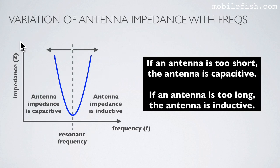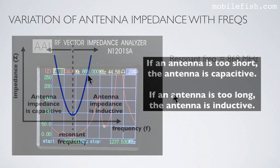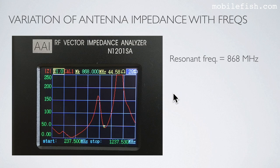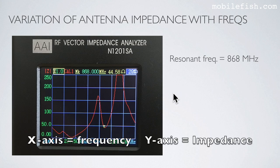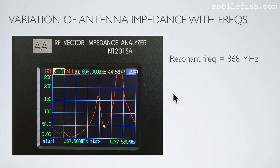This graph shows impedance on the y-axis and frequency on the x-axis. At the resonant frequency the impedance is purely resistive. On one side of the resonant frequency the antenna impedance is capacitive, and on the other side it is inductive. So if an antenna is too short it is capacitive, and if it is too long it is inductive. Using a vector impedance analyzer, I checked my antenna which should resonate at 868 MHz. The analyzer confirmed it is tuned very well, with an impedance of almost 50 ohms.